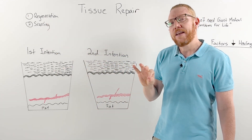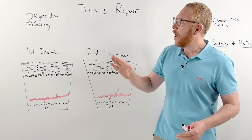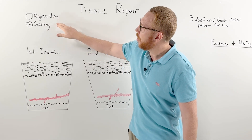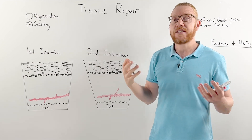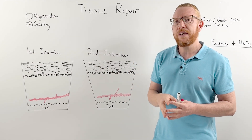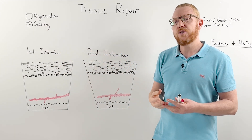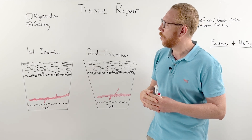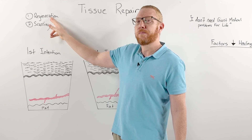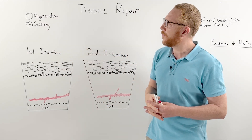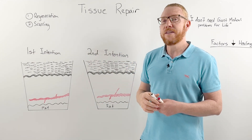Regeneration means that the injured cells go back to how they were before the injury. What determines which pathway is taken depends on how extensive the injury is. A really severe injury is more likely to go down the scar tissue pathway, while a less severe injury hopefully goes down the regeneration pathway. Another factor is the type of tissue that is damaged.